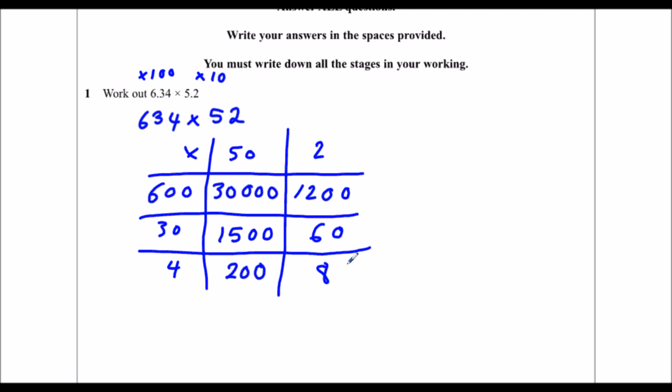I've done all the multiplications separately. Now I need to add them up. I've got 30,000. I'm going to write them out in size order. Next one, 1,500, 1,200, 200, 60, and 8. I'm going to add them all up.